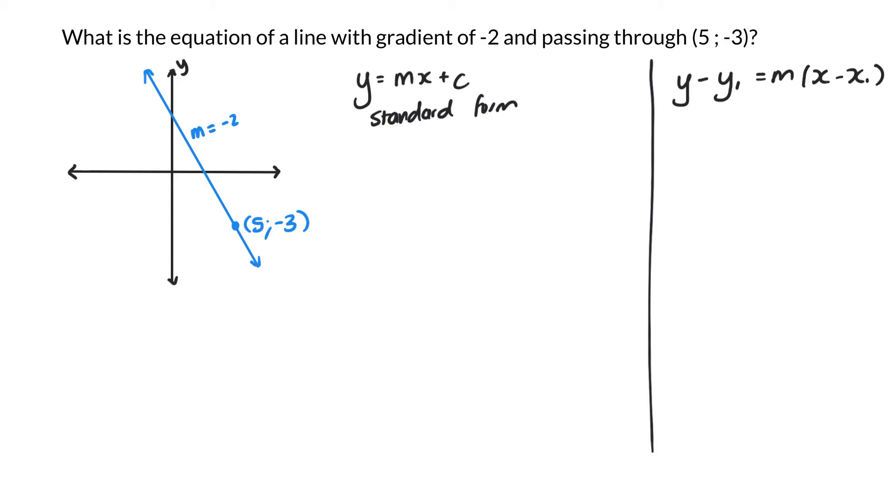So the first way to go about this is you know what the gradient is. So you know that m is negative 2, so y equals negative 2x plus c. Now the next thing I need to find out is what the value of c is. Now the thing about a straight line graph is the line is made up of all the possible points that would abide by that formula. So if you take a point that's already given, it has to abide by what the formula is. So if I substitute 5 and negative 3, where 5 is the x value and negative 3 is the y value, then I should be able to find out what c is.